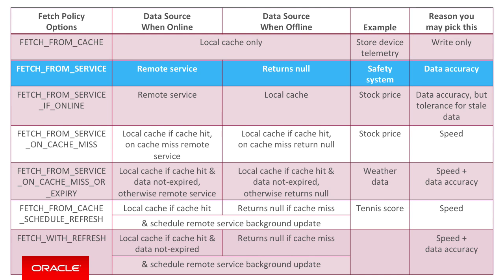The fetch from service option will always go to the remote server for data if online, using only the most up-to-date data. If you're offline, it returns null. Consider data from a safety system indicating whether an electric board was live — it would be critical to show the most up-to-date value, or no value at all, rather than an old cached value which could jeopardize somebody's health or safety.